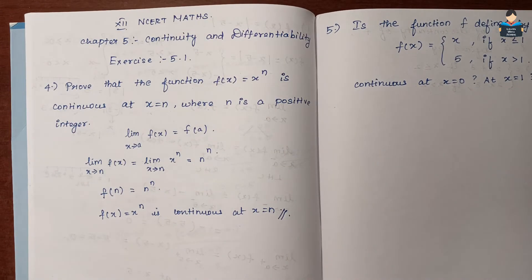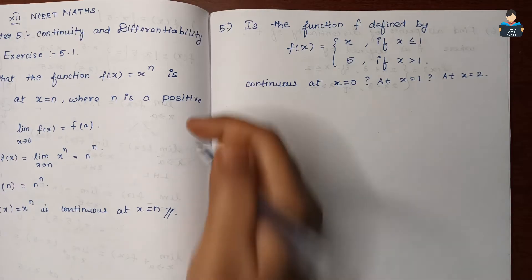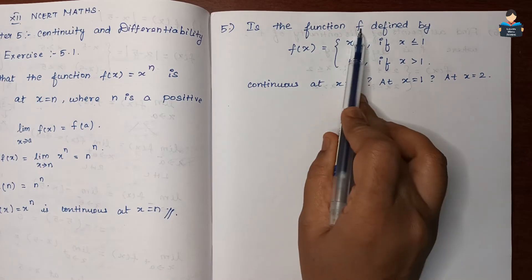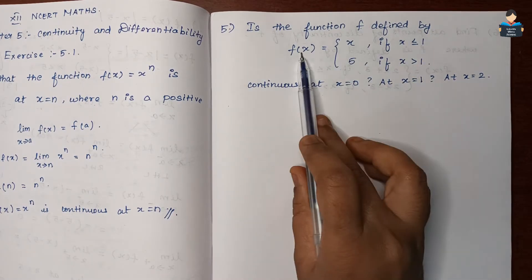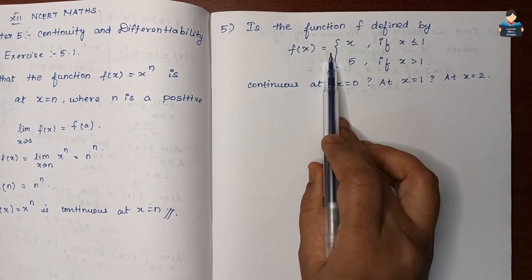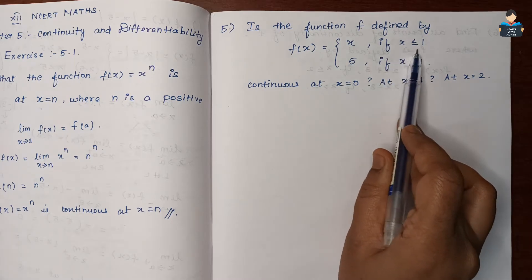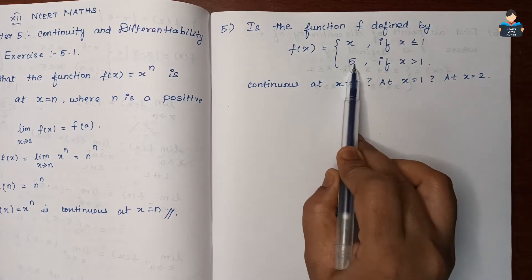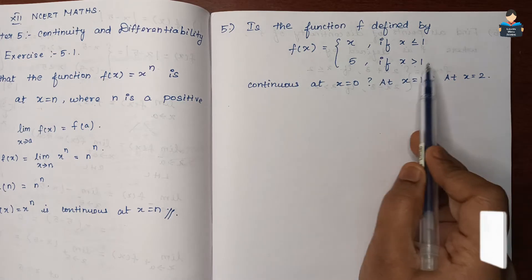Now the 5th question: the function f is defined by f(x) = x if x is less than or equal to 1, and f(x) = 5 if x is greater than 1.